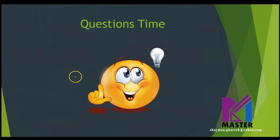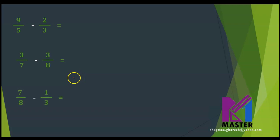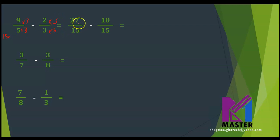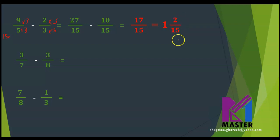Now let's have some questions together. 9 over 5 minus 2 over 3. The denominators must be the same — the common multiple is 15. I multiply the first fraction by 3 up and down, and the second fraction by 5 up and down. The new fractions will be 27 over 15 minus 10 over 15. 27 minus 10 equals 17 over 15. This is an improper fraction, so I will change it into a mixed number: 1 and 2 over 15.